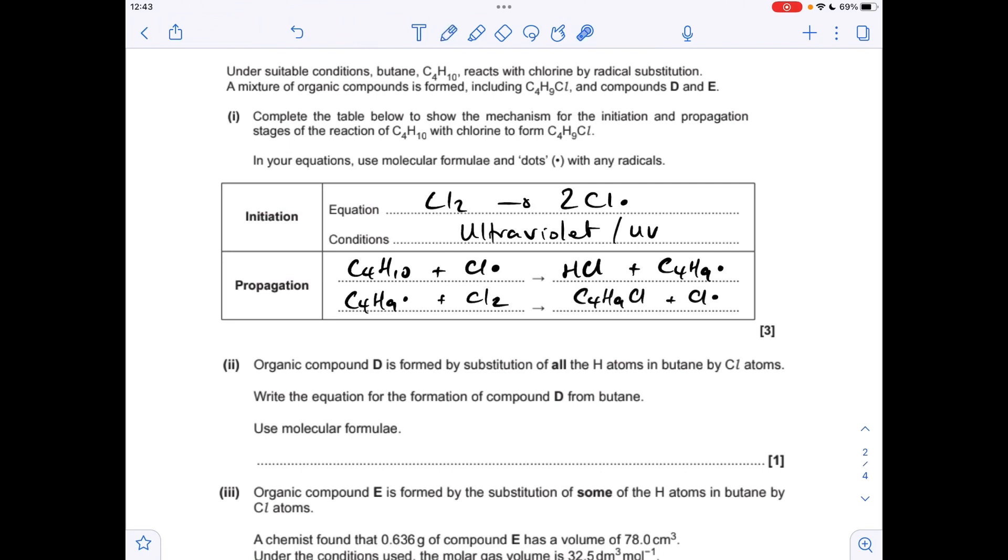Moving on to the next part, so the sort of mantra that I have for this is every substitution requires a mole of halogen, and every substitution also makes a mole of hydrogen halide. So because all 10 hydrogens are coming out, we're going to need 10 moles of chlorine, so we get C4Cl10, and we're going to make 10 moles of HCl.